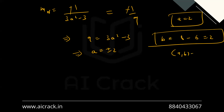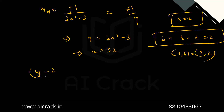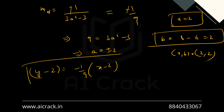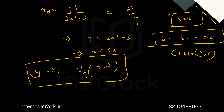The equation of the normal at (2, 2) is: y - 2 = (-1/9)(x - 2). Similarly, we can find the equation for a = -2 as well.